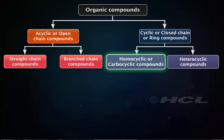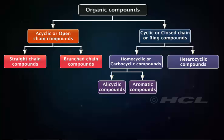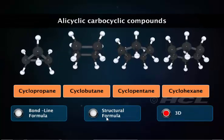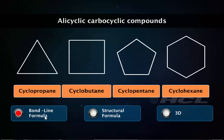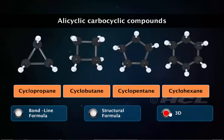Homocyclic compounds contain rings which are made up of only carbon atoms. These are further subdivided into alicyclic compounds and aromatic compounds. Alicyclic carbocyclic compounds resemble the aliphatic compounds in most of their properties. Some examples are cyclopropane, cyclobutane, cyclopentane, cyclohexane, etc.